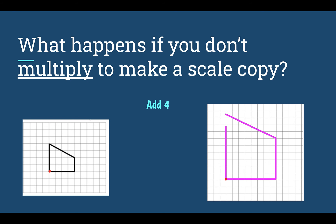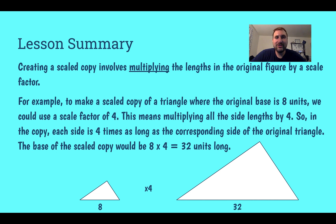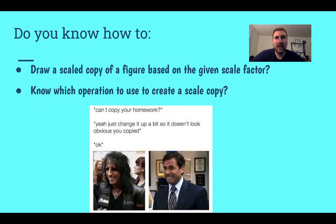In this lesson we learned how to create scale copies and how that involves multiplying our side lengths or distances by our scale factor. We have an example here: we had a triangle that started with eight. If we wanted to multiply by a scale factor of four, our new triangle would be 32, because we had to multiply by four. After this lesson, do you know how to draw a scale copy based on the given scale factor, and do you know what operation you need to use to create your scale copy? That is it for lesson three on making scale copies.